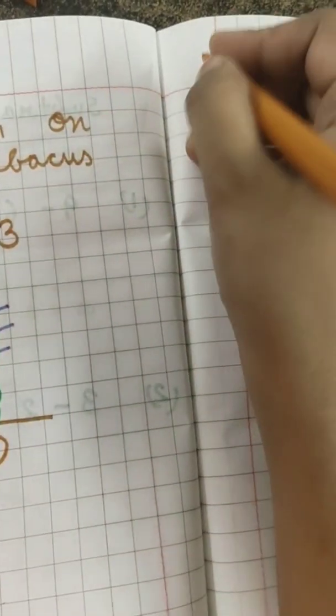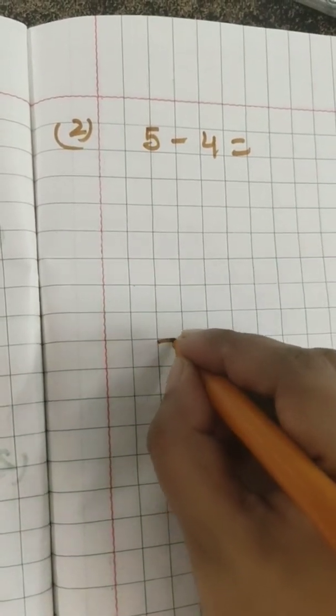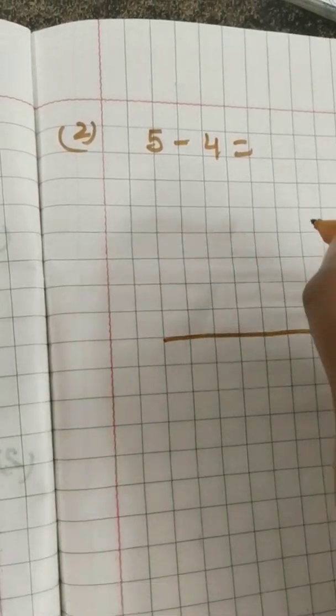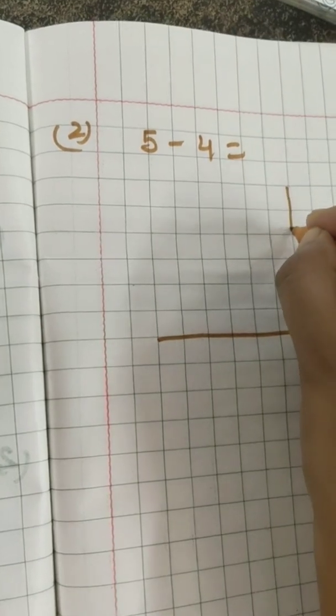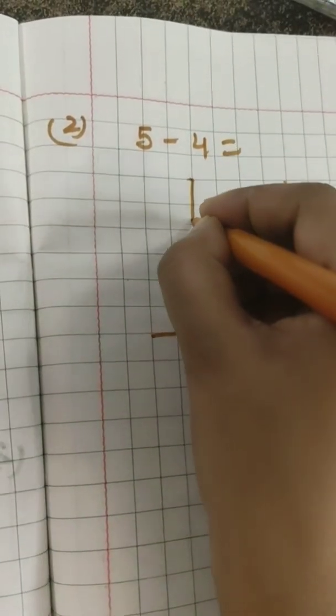Now ma'am will do one more question, she will show you one more. And this question is 5 minus 4. I don't know what is the answer, so for that we have to do subtraction on abacus. We will draw a straight line, then one spike, then one more spike.